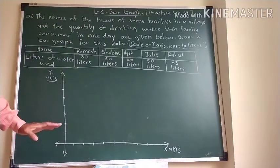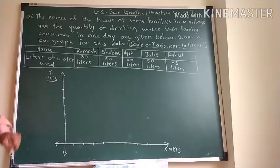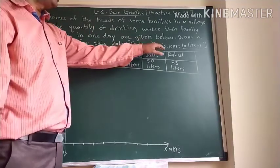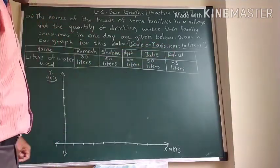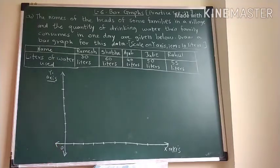On this marking we can write these names and the liters. Now on Y axis what is the scale? 1 cm. This is called as an intersection, is called as 0.